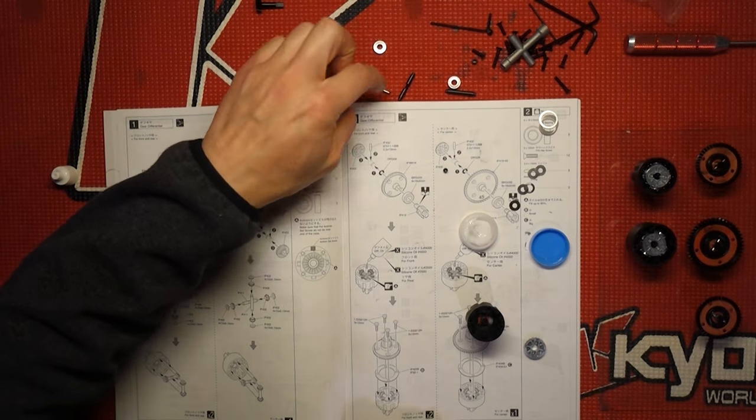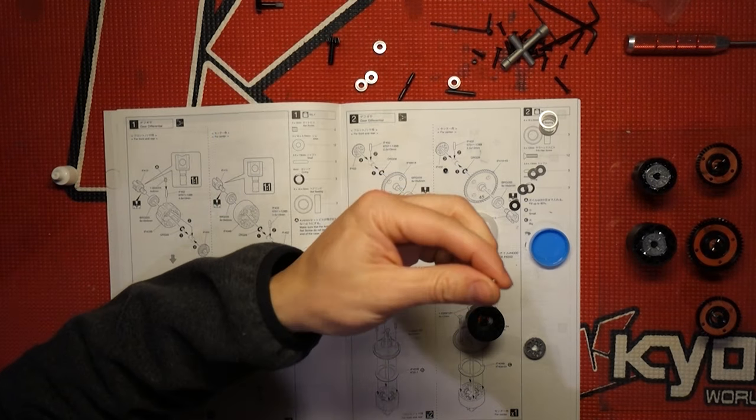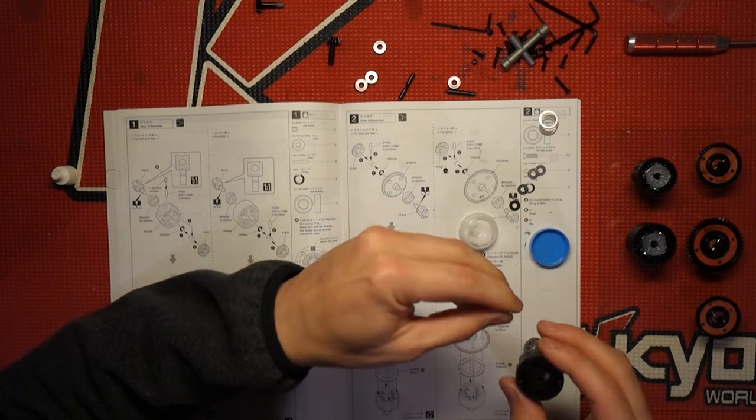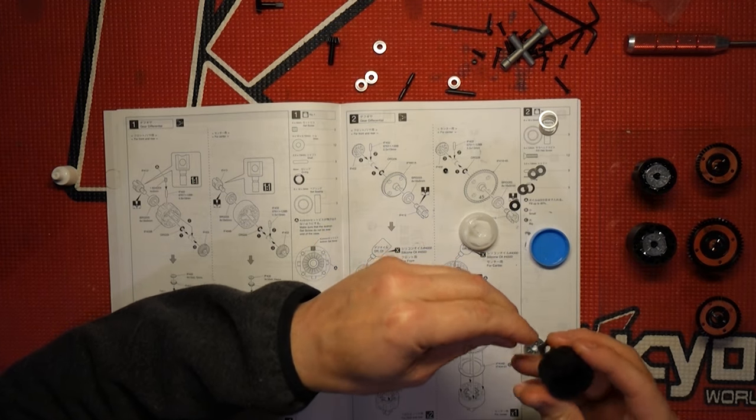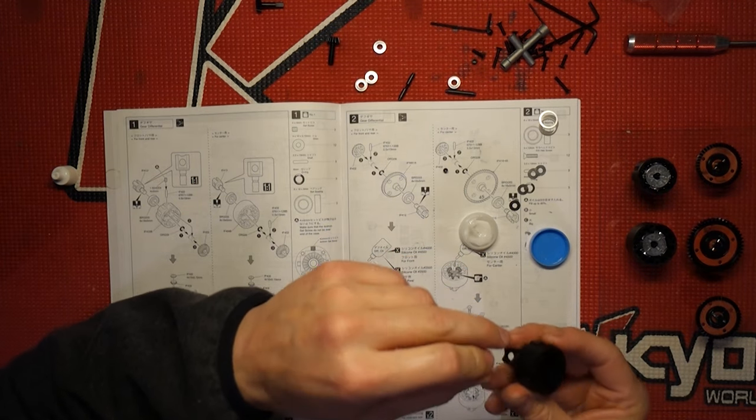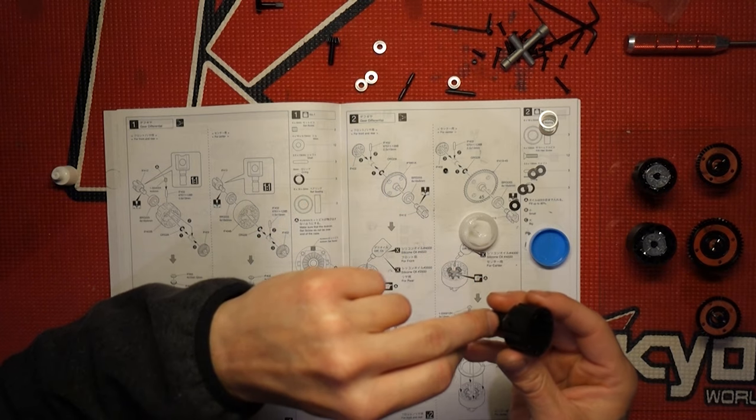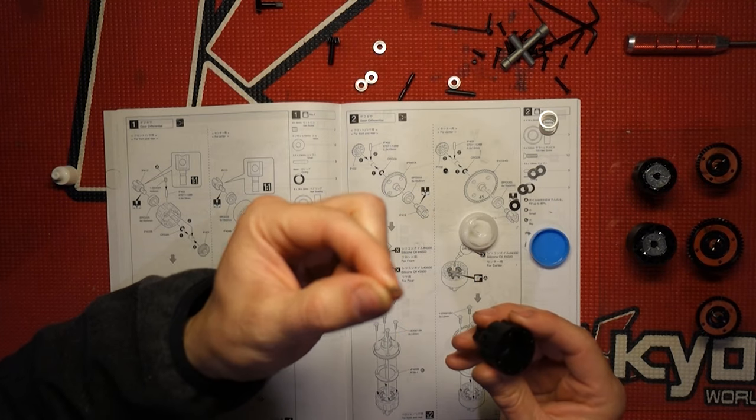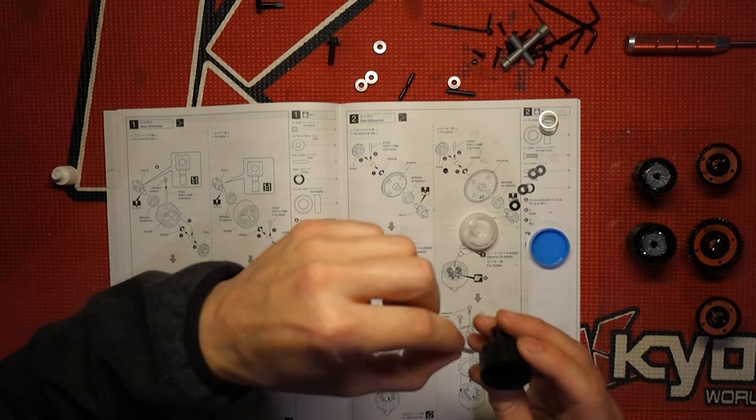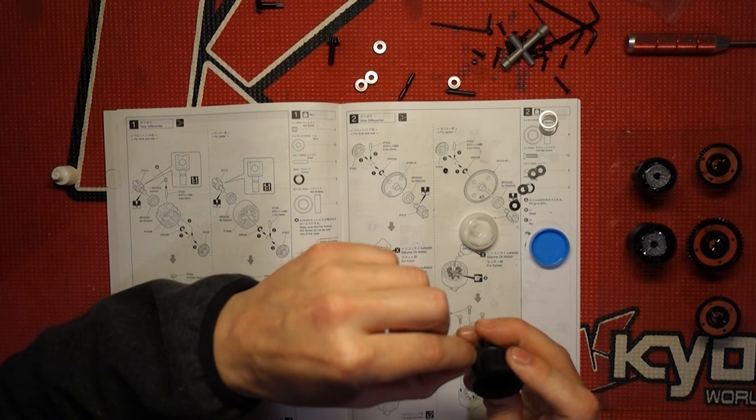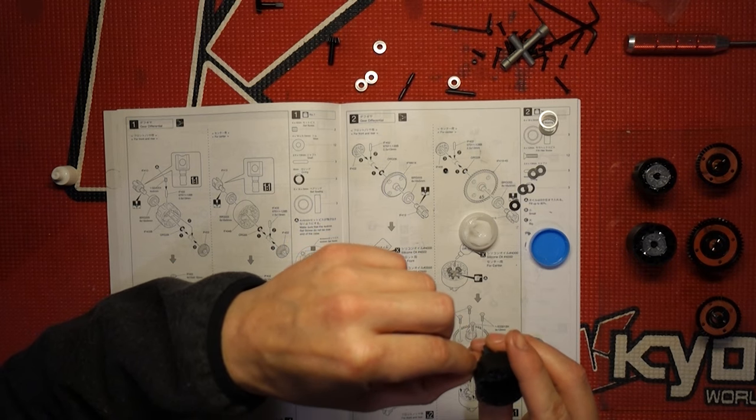Grab your other pin. Just put a little bit of grease. Just run it around in your fingers. Get a little grease on it. And go ahead. On the front and rear differential, there's a hole in the side. And that's where you'll put your pin in for your outdrive.